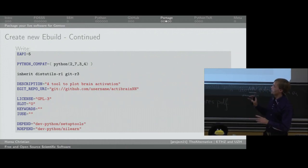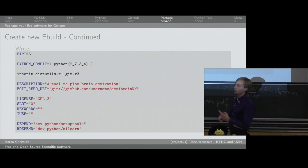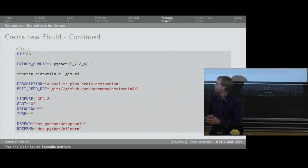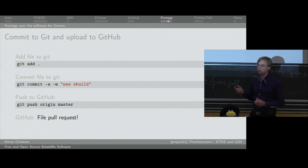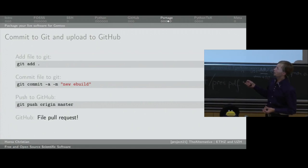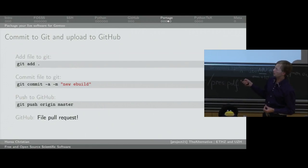Keywords and IUSE are just important so Portage knows whether it's safe to install, but we don't care about that right now. The really important part when packaging things is telling Portage what your script depends on. It depends at build time on setuptools — remember we imported that in setup.py. And it depends at run time on nilearn, because that's where all our plotting functions come from. After writing this, press Control-O, enter, Control-X to save. For those who have already finished, you do the same as before: git add, git commit -a -m 'new ebuild', and then push.